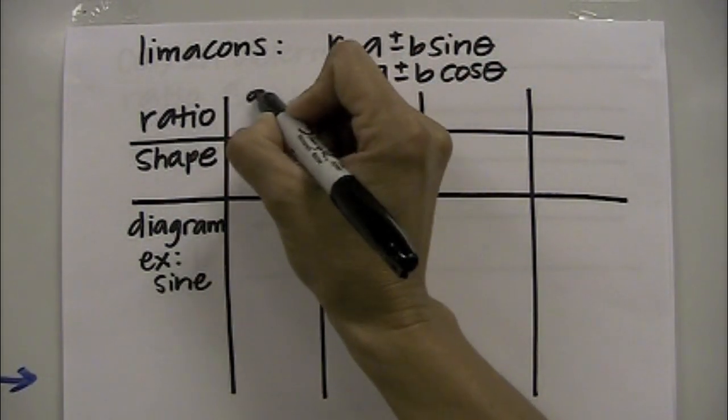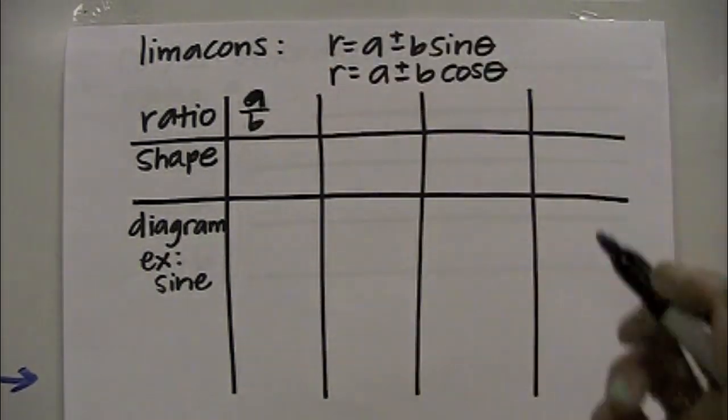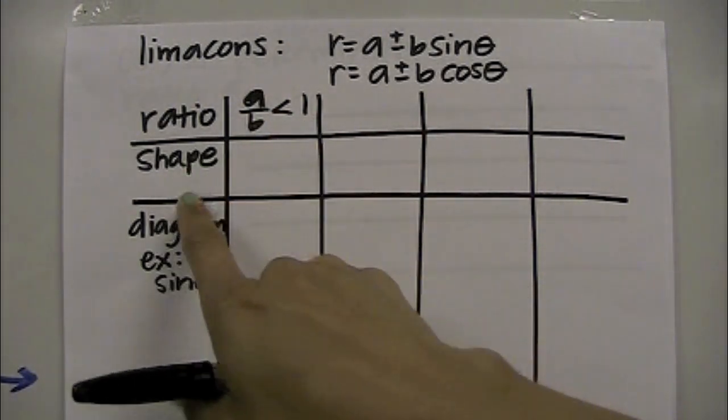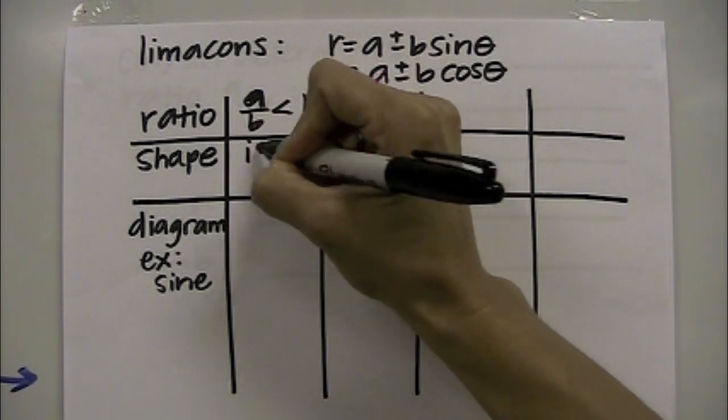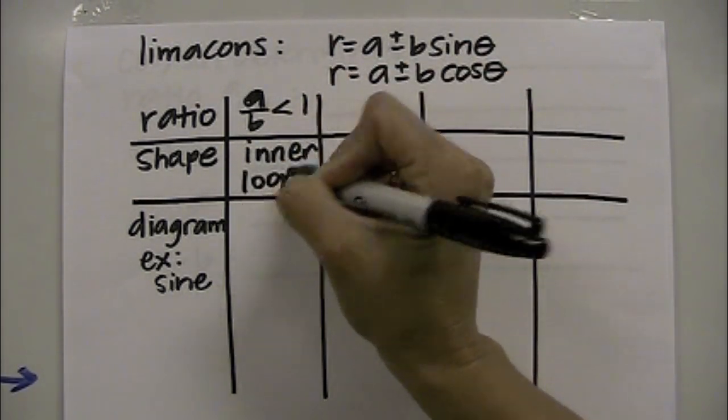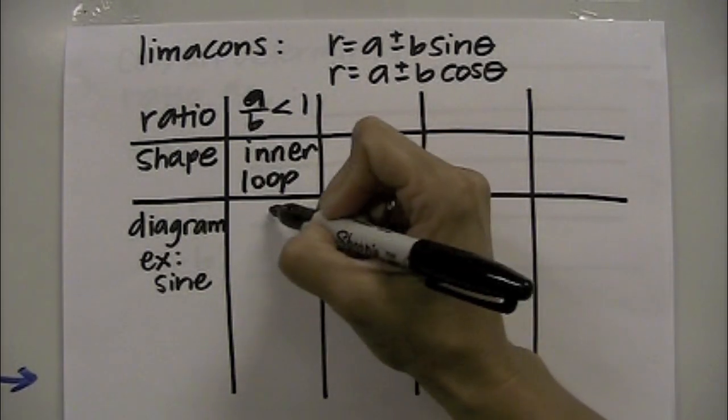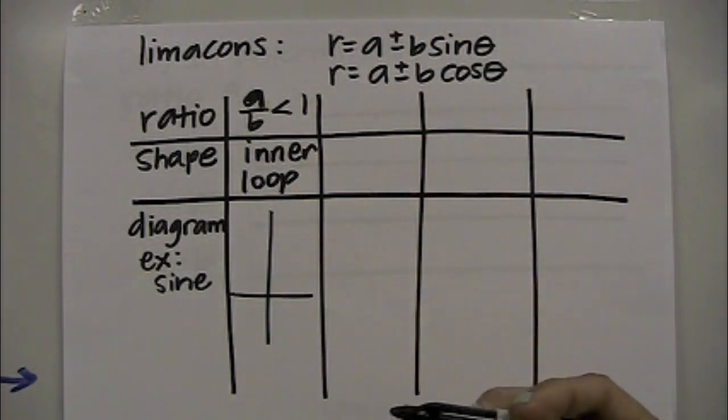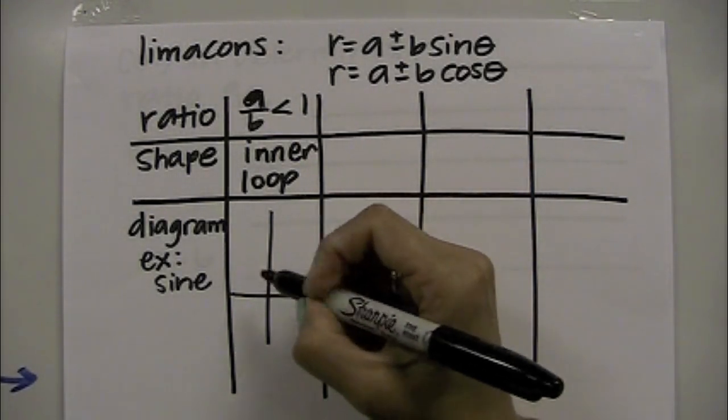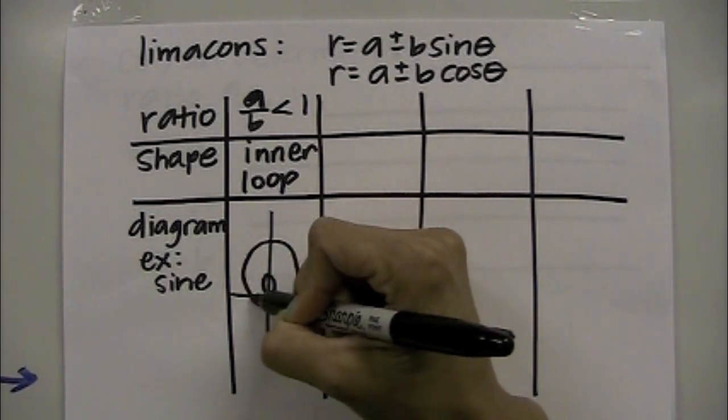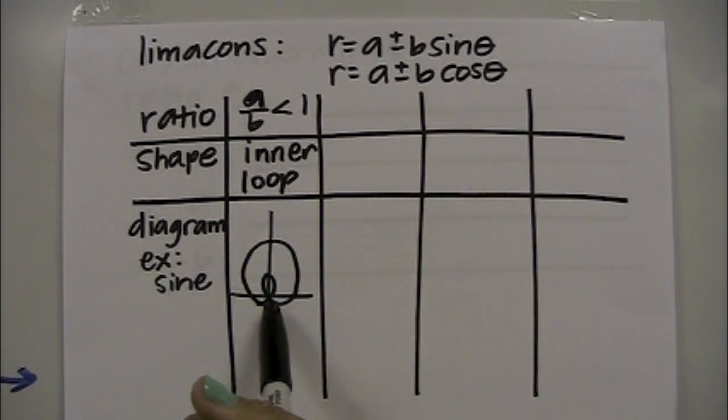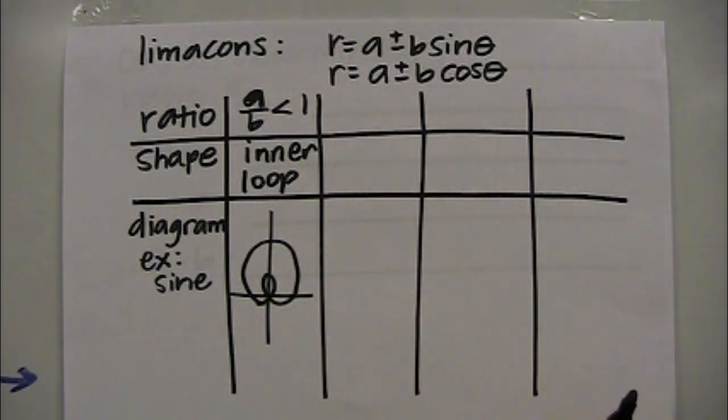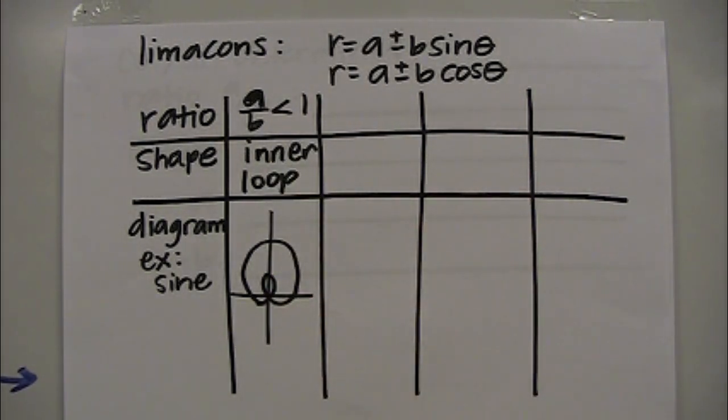So the first ratio scenario is going to be a over b is less than 1. When your ratio of a over b is a value that's less than 1, the shape of the limaçon will be an inner loop. I'm going to draw a little mini informal graph, and I want to use the example as if it was a sine equation. An inner loop looks something like that. This would be an example if it was a sine graph, and if it was positive, a plus not the minus, indicating that it's above the x-axis, and that's kind of in general what the inner loop will look like.